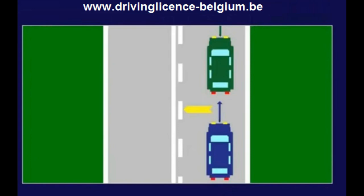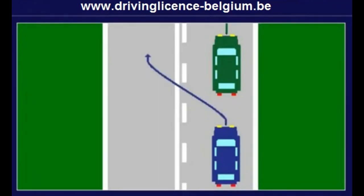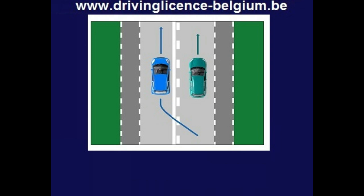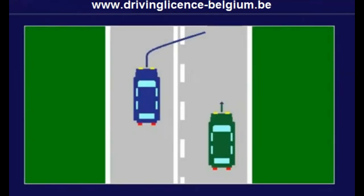A broken white line and a continuous white line. Sometimes there is a broken white line painted next to a continuous white line. When the broken white line is on your side of the road, you may drive across to overtake a driver. Once you have overtaken the vehicle, you drive across the continuous white line to go back to the right lane.